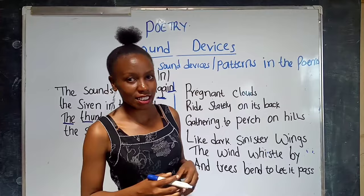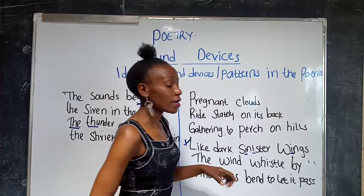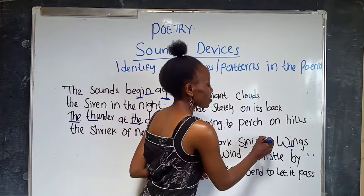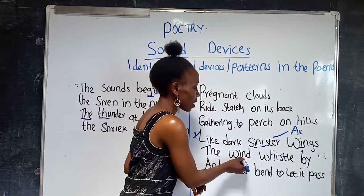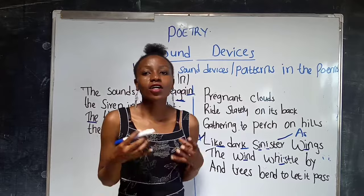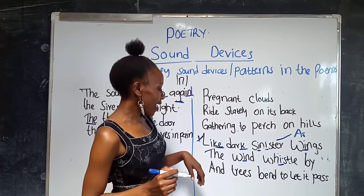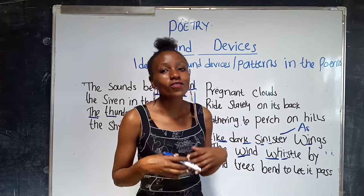Let us look for assonance. Focus on this line: 'Like dark, sinister, wind.' We have vowel sounds repeated — these vowel sounds qualify as assonance. Also in the next line, 'the wind whistle by,' the same E vowel sound is repeated, and that is assonance. We also have 'like' and 'dark' where the consonant K is repeated, and that is consonance. And 'wind' and 'whistle' — that is alliteration because it is at the beginning of the words.